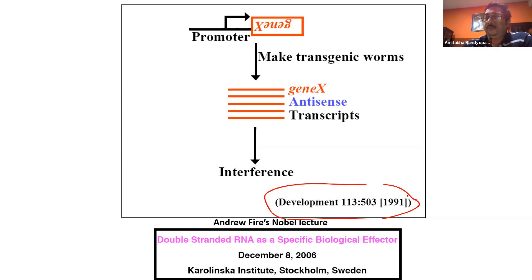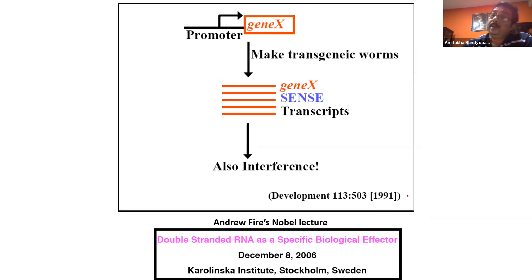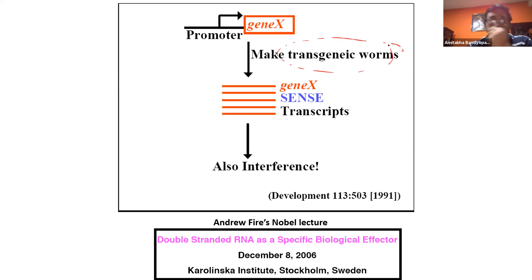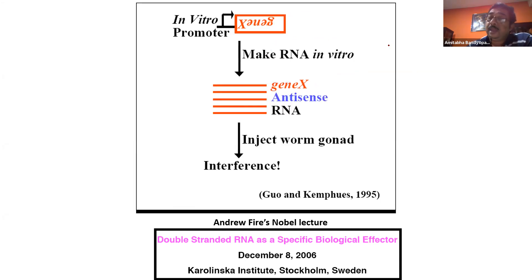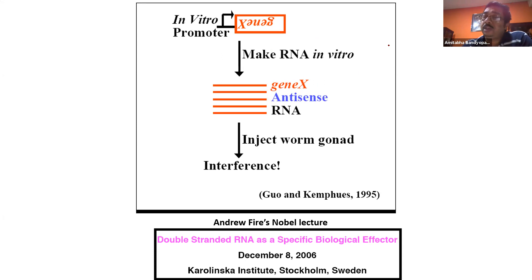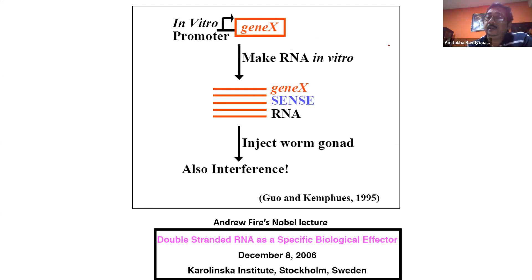Kemfusa's lab made RNA in vitro in the antisense direction, injected the RNA into the worm gonad, and got interference. If they made RNA in vitro in the sense direction, they also got interference. Andrew Fire did not forget the observation from his 1991 paper that both the sense and antisense constructs could produce the same loss-of-function phenotype.